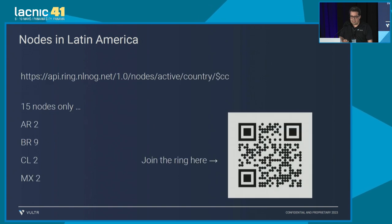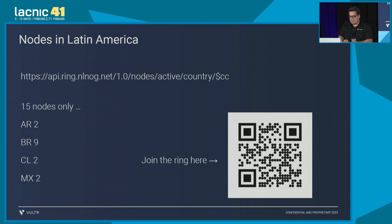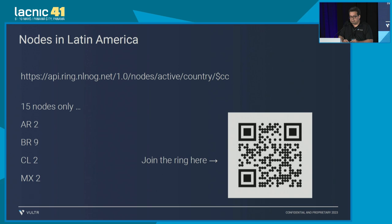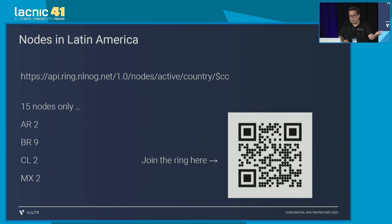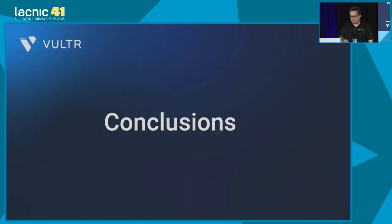It also shows which virtual machines were unable to access. So the trap is an invitation. The reason I bring this presentation is, first, to show the tools available to measure anycast. The second reason is to invite you to join the Ring. In Latin America, there are only 15 nodes: two in Argentina, nine in Brazil, two in Chile, and two in Mexico. The best thing would be to get together and join this community so you can later have access to these 500-600 virtual machines around the world.